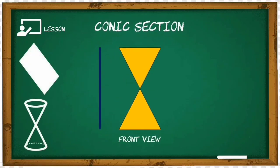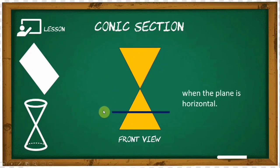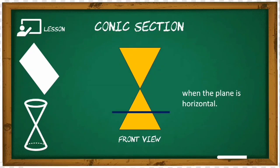Let's talk about the first type of the conic section. Considering our cone in front view and our plane — since we know it's a two-dimensional figure, in side view we have a single line. Always remember that whenever the plane intersects the cone horizontally — meaning the plane is parallel to either the bottom or top base of the double cone — the conic formed is a circle.